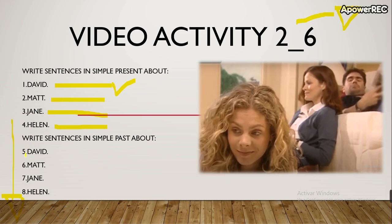Now, sentences in simple past — from number one until number eight, simple past. For example, Matt was at home yesterday. So everything according to the video. Could be affirmative or negative. You can say David didn't go to Spain — no fue a España — so according to the video. Total eight sentences.